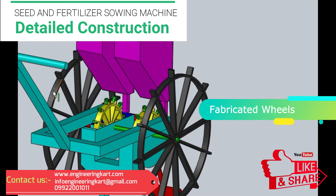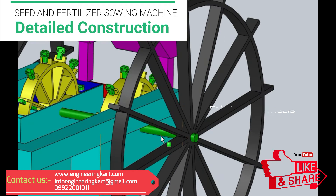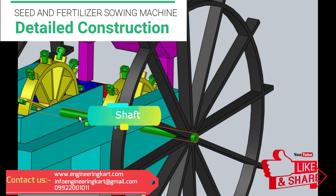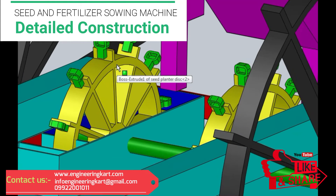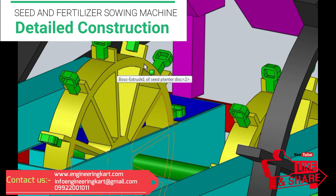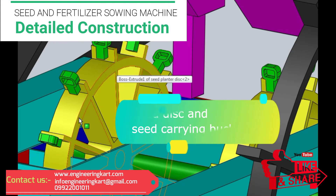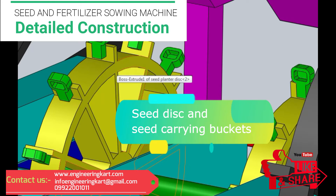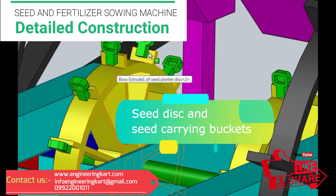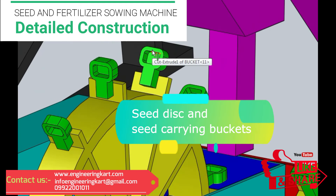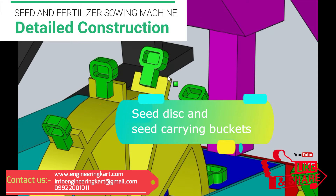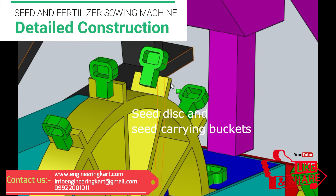In the farm, for smooth running of the machine, fabricated wheels are developed. The two fabricated wheels are mounted on the shaft. On the same shaft, the fabricated seed disks are mounted. On the seed disks, the seed buckets are screwed, and according to the type of seed and fertilizer, the seed bucket size and shape will vary.